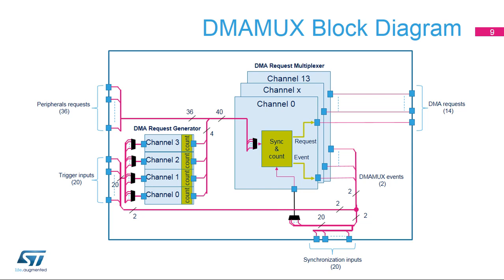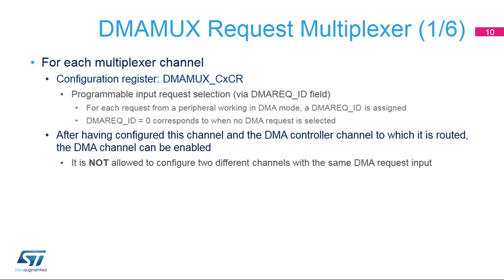A DMA request multiplexer channel generates both a request to the DMA controller and an event that can be used as a synchronization input as well as a trigger input. Do not confuse DMA request generator channels 0 to 3 with DMA request multiplexer channels 0 to 13. For each multiplexer channel, there is a configuration register, DMA MUX CX CR, with programmable input request selection via the DMA REQ ID field. For each request from a peripheral working in DMA mode, a DMA REQ ID is assigned. DMA REQ ID equals 0x00 corresponds to no DMA request selected.